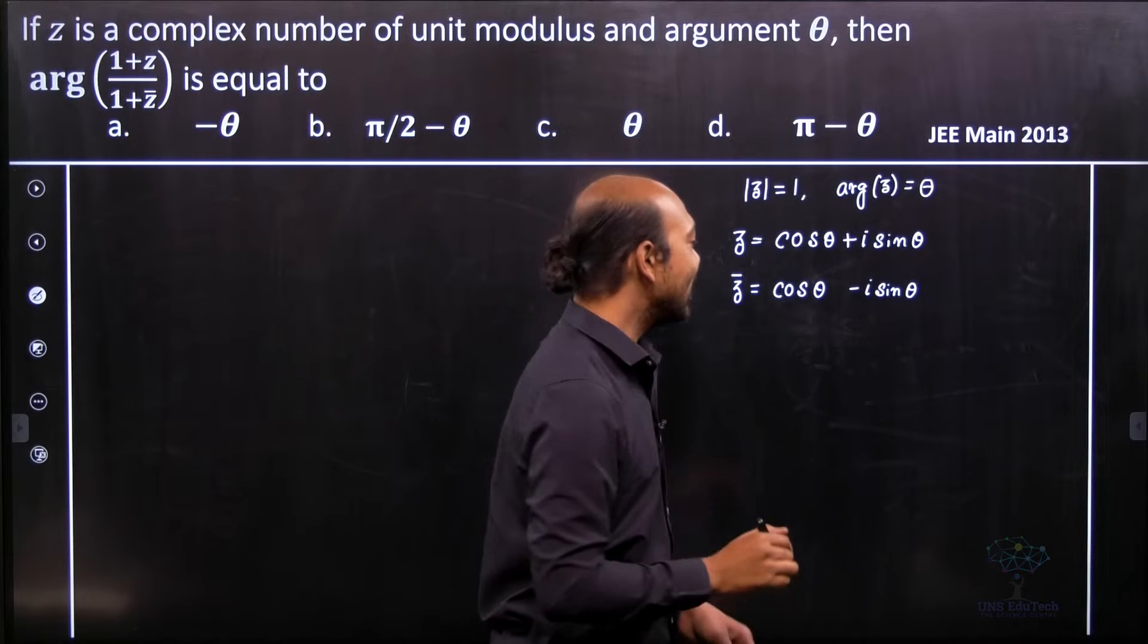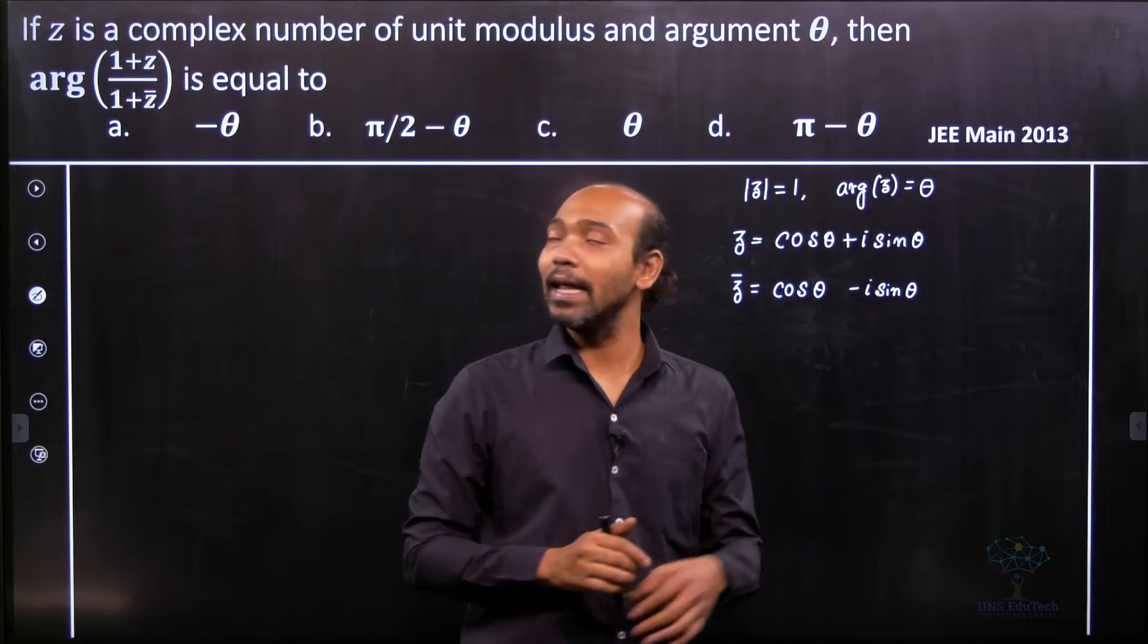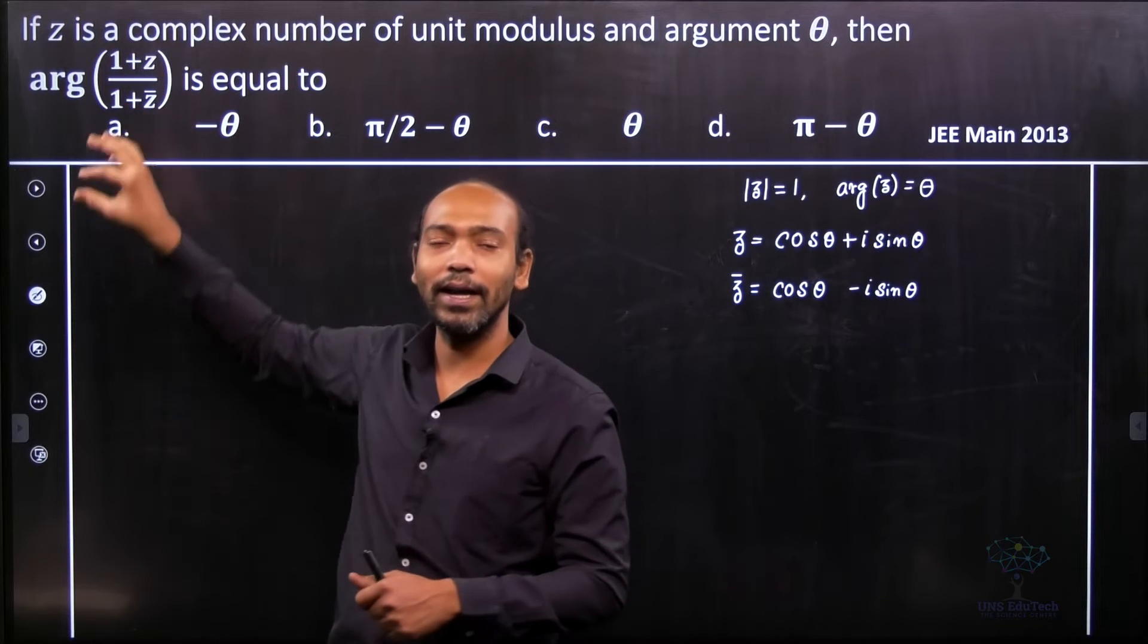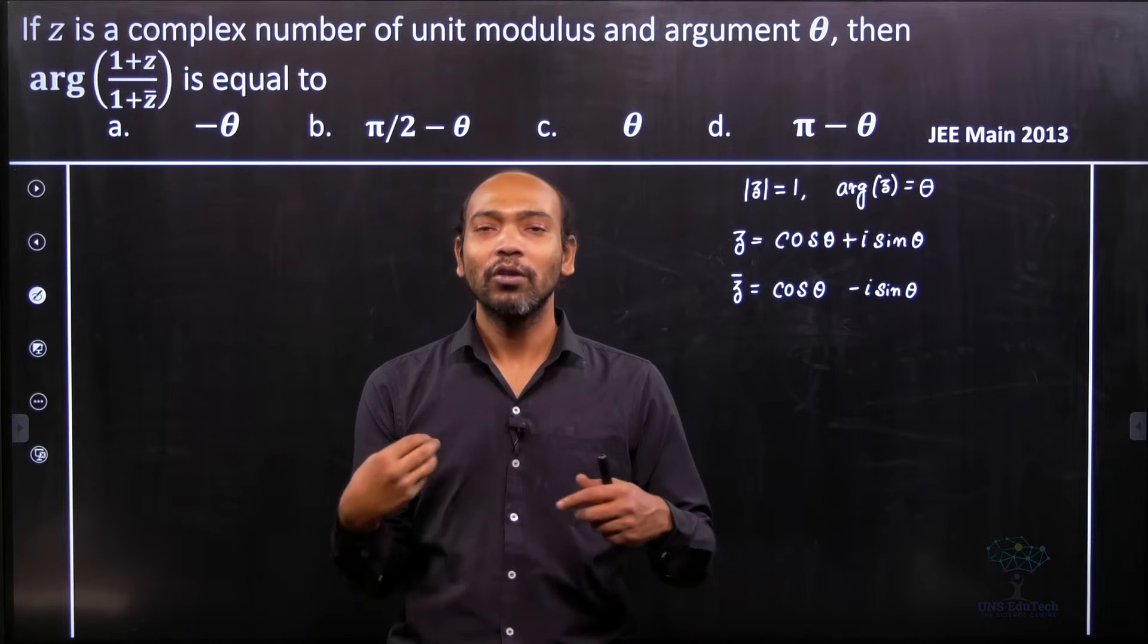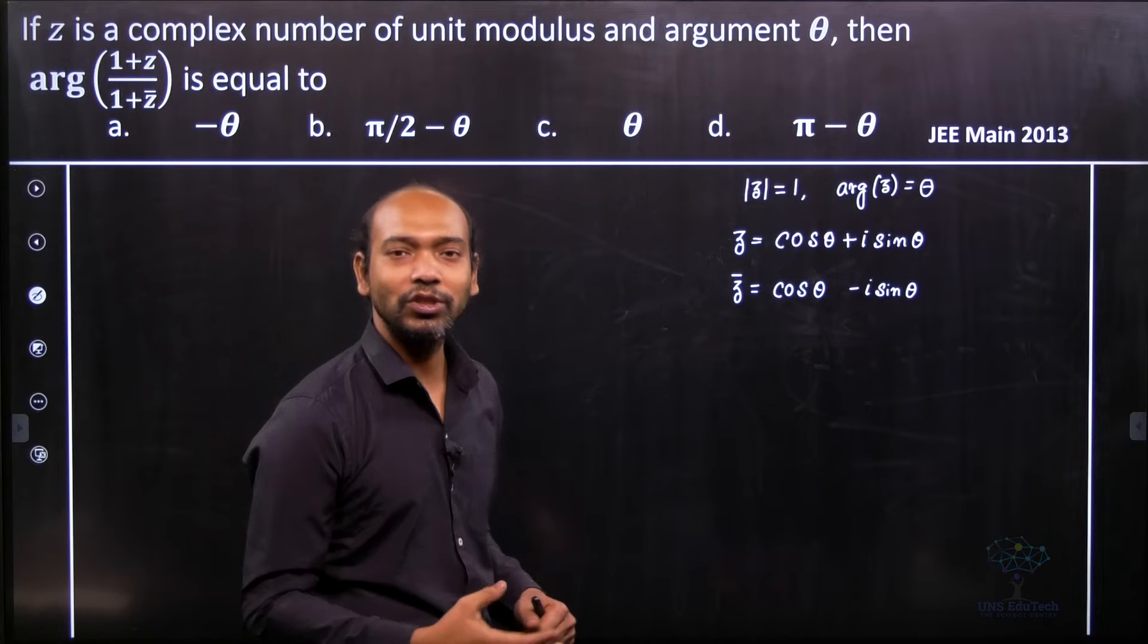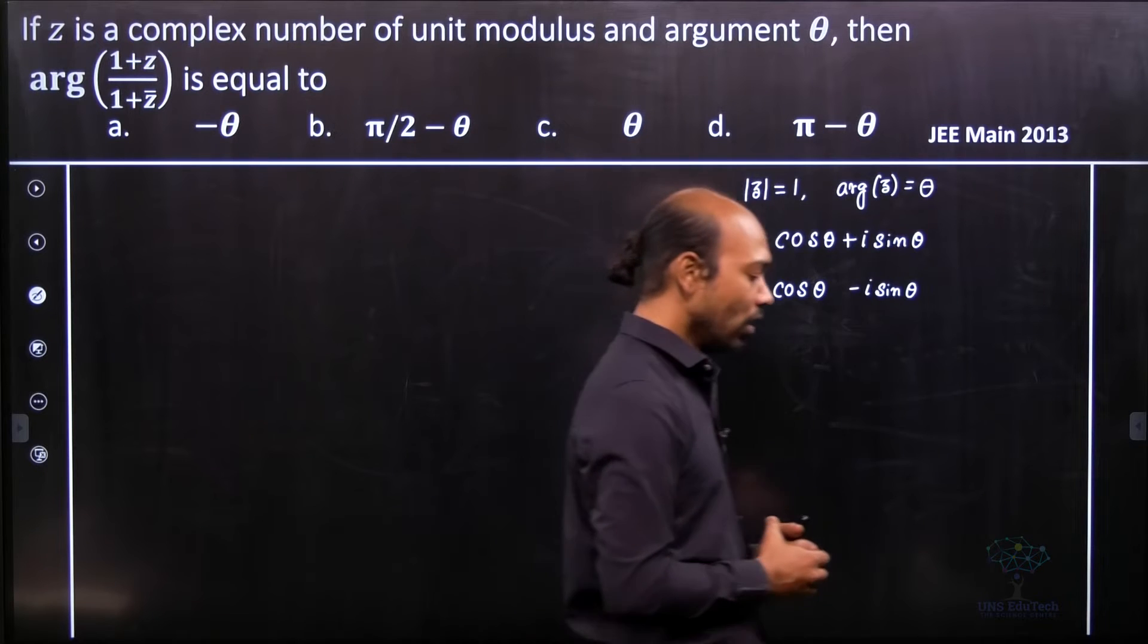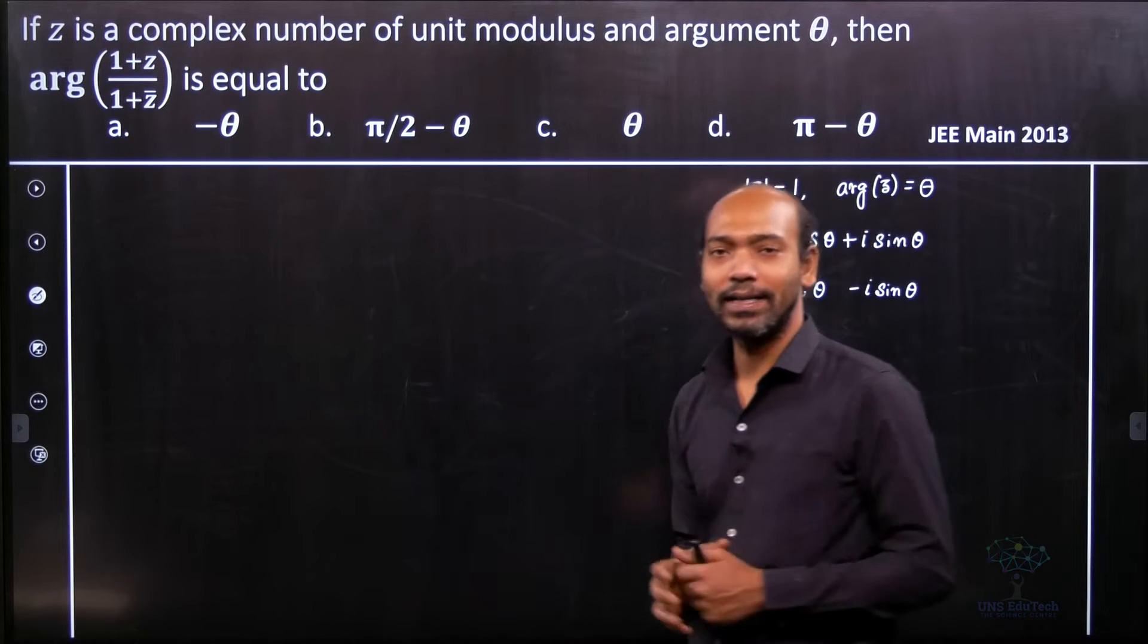Now if you see that we need to use this relation and substitute it here. Then we can easily simplify what is our complex number by using cross multiplication and multiplication by the conjugate denominator. But that takes longer time.